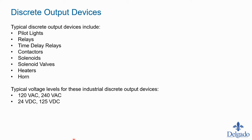We're still talking about discrete devices — things that will be on or off with no in-between states. Our typical discrete output devices include pilot lights, relays, time delay relays, contactors, solenoids, solenoid valves, heaters, and horns. The control voltages for these devices are typically either 120 volt AC or 24 volt DC, and we'll look at each one in more detail.